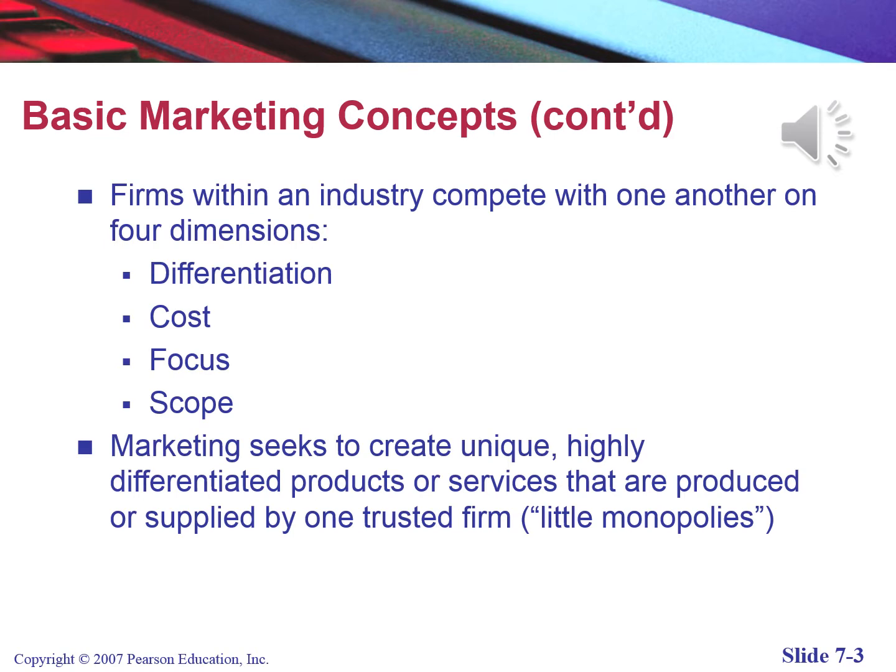Not all types of online marketing have these four features. Firms within an industry compete with one another on four dimensions: differentiation, cost, focus, and scope.